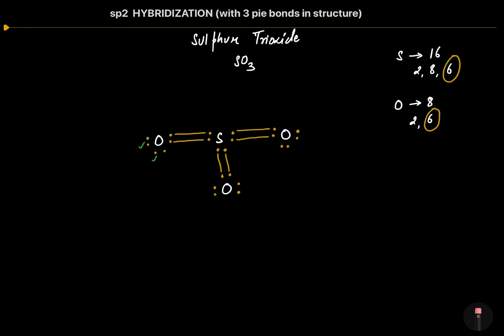Now let's come to the 2nd oxygen. Counting the valence electrons for the 2nd oxygen, we get 8 electrons total — so the 2nd oxygen also attained the octet after the formation of 2 bonds with the sulfur. Similarly, the 3rd oxygen has also attained 8 electrons in its valence shell after the formation of 2 bonds with the sulfur.